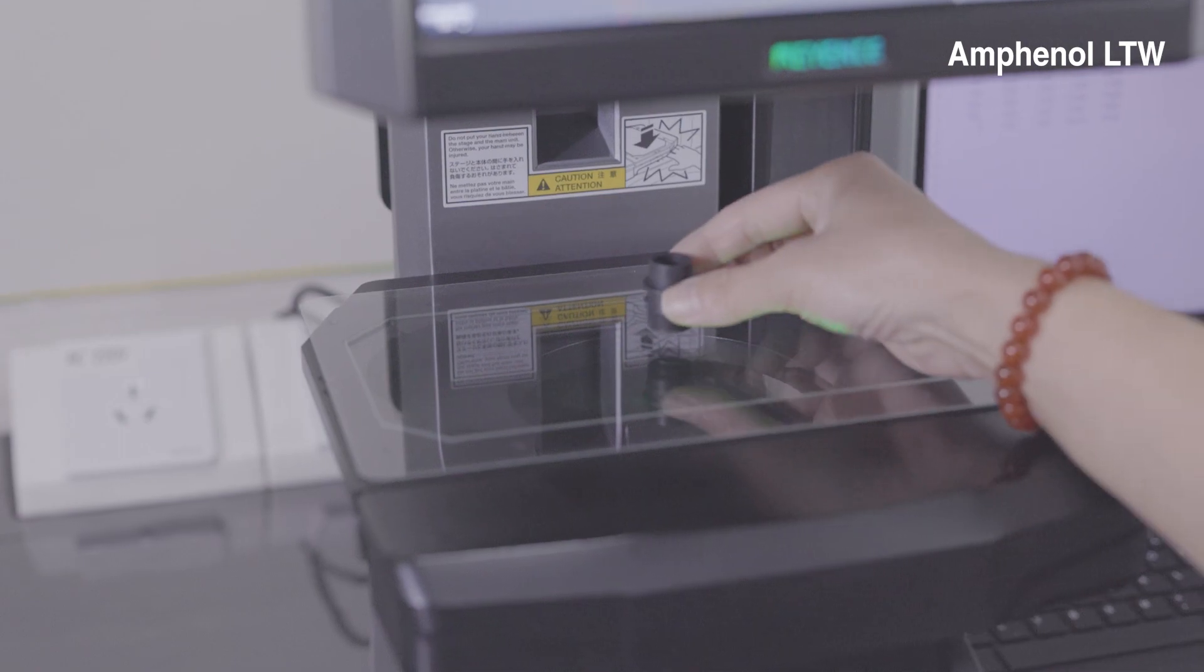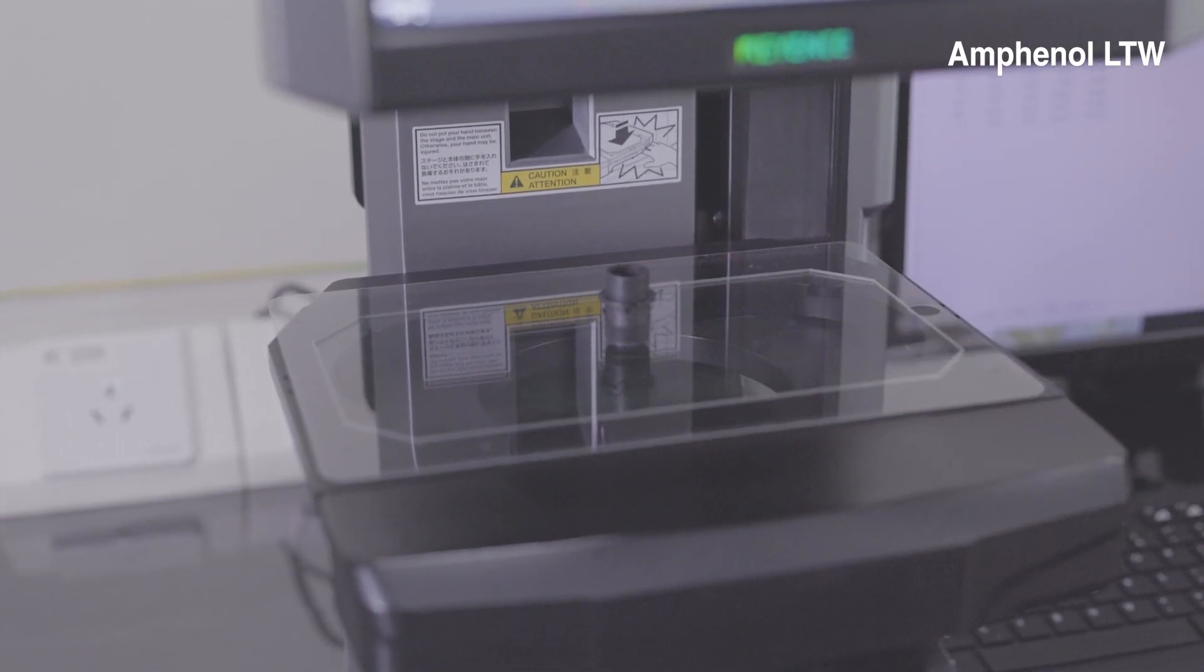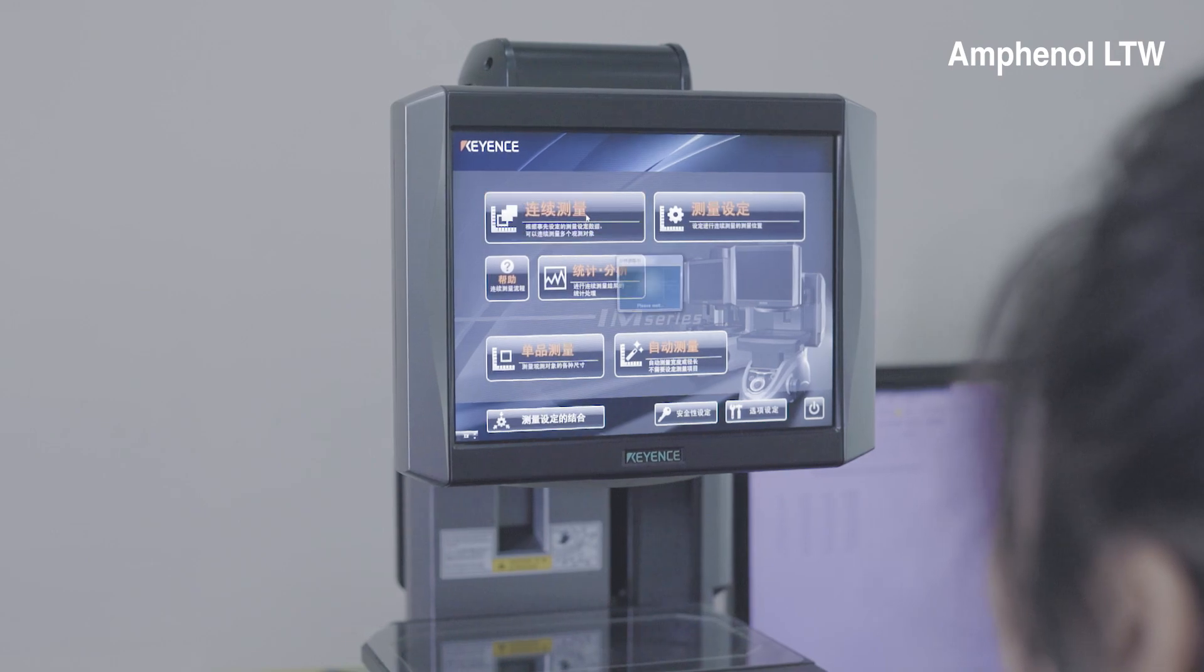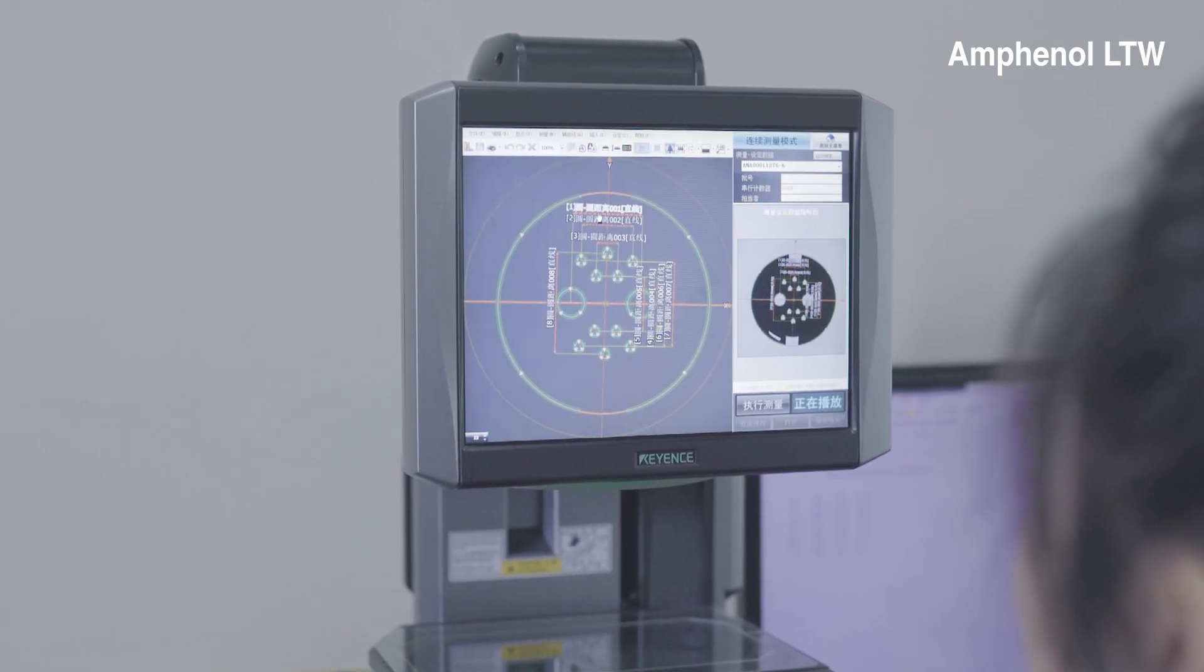Automated optical inspection checks for dimensions, appearance, and more. It improves and saves measuring time and speed, reducing human operation error.